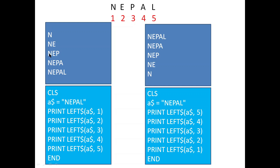Without using a for loop, what we can do is write it out step by step. First time we want one character from the left hand side — N. Then two characters — NE. Then left dollar, a dollar, comma 3 gives three characters from the left. In the same way, four and five. So without using the for loop we have printed this pattern. You can write the same code and check it.